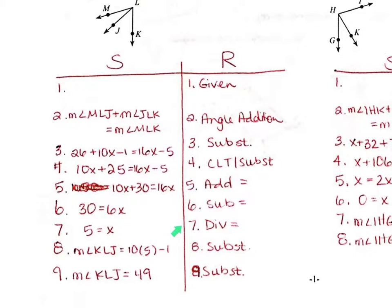And then division, so we're going to divide both sides by five. Again, like I had done in one and two, we're substituting values to get our final answer, which is the measure of angle KLJ because that's what they're asking for.